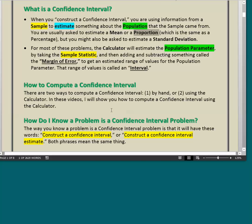The way you know a problem is a confidence interval problem is that it will have these words: CONSTRUCT A CONFIDENCE INTERVAL or CONSTRUCT A CONFIDENCE INTERVAL ESTIMATE. Both phrases mean the same thing. So when you see those words in a problem, you know what kind of a problem it is, and you'll know what to do to solve it.